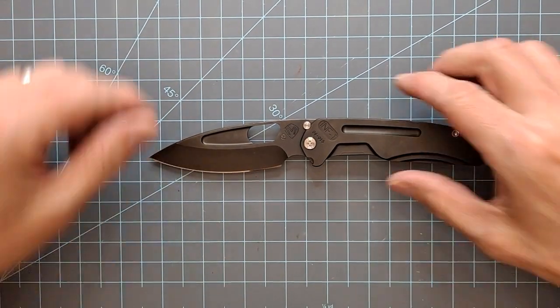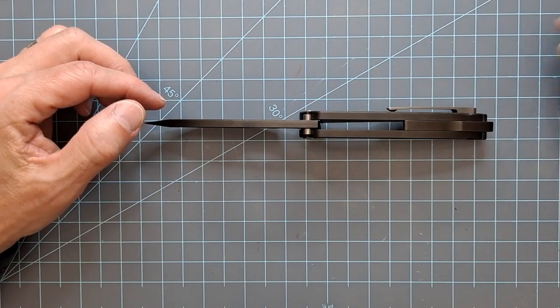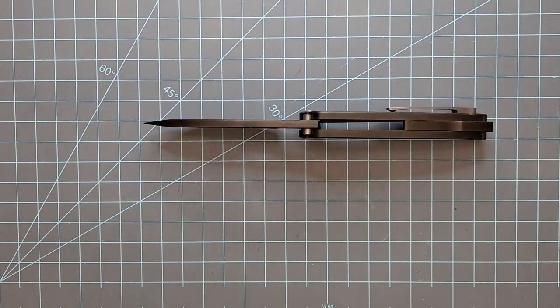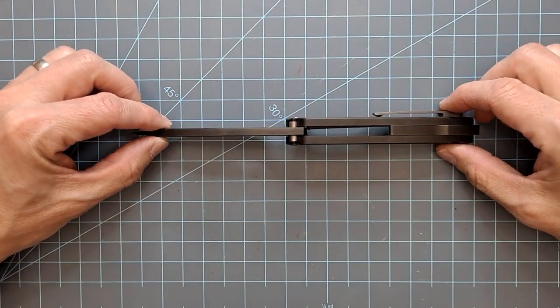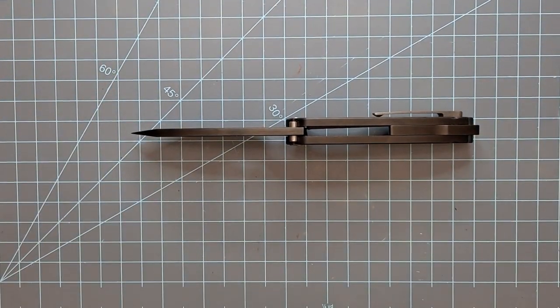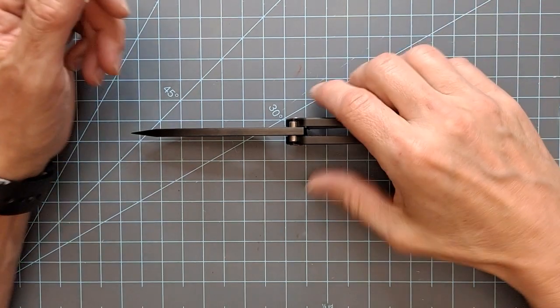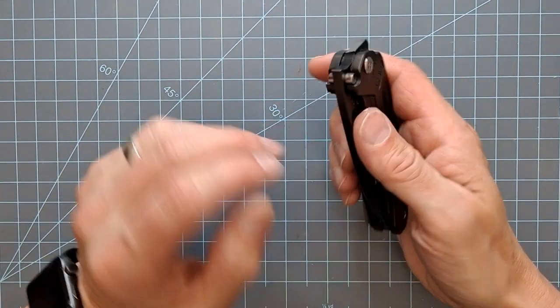So the blade stock thickness is 0.19 and then the scale thickness is 0.187. So that's pretty standard Medford thickness on a lot of their knives right there. So that's going to be like the H varieties of the Marauder. You're going to have that 0.19, 0.187 all the way around on those. And not the slim midi, of course, but the Marauder H and then the midi Marauder are going to be like that. And they've got a couple other models that are like that as well.